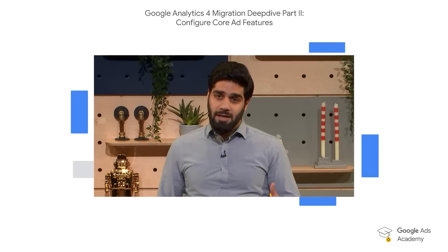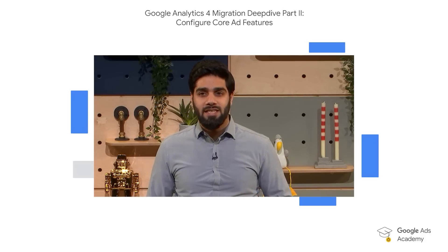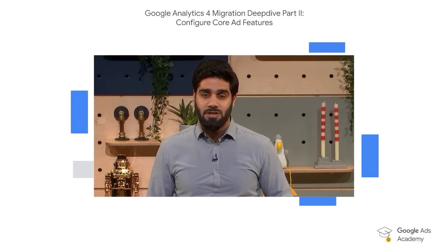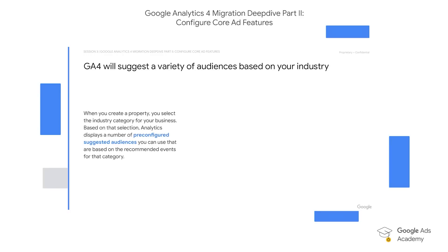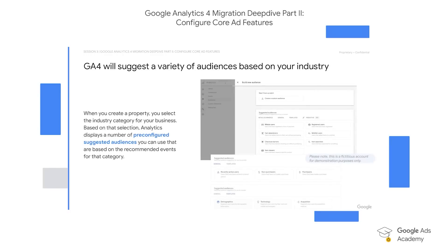There's also a second option to choose from: GA4 suggested audiences from templates based on your industry. For instance, you might want to push a particular product or service to the suggested audience of non-purchasers — potential customers who have not made a purchase yet. You can also choose from a variety of demographic options or even acquisition channels. For example, you might want to tailor your content depending on which social media platform your user is coming from.